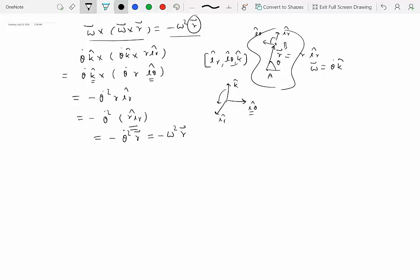So that's why we can write this. Now the advantage of doing something like this is that this involves doing two cross products, which takes time. On the other hand, you can simply write this as minus omega square r, and this is the term that appears when you are writing the acceleration equation.